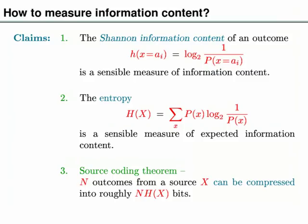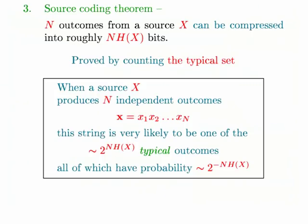The entropy, which is the average of the Shannon information content, is claimed to be the right way to measure average information content. The third assertion, which we sort of proved last time, is the source coding theorem: if you get a very long string of outcomes from a random source, identically distributed, those outcomes can be compressed into roughly n times the entropy bits.